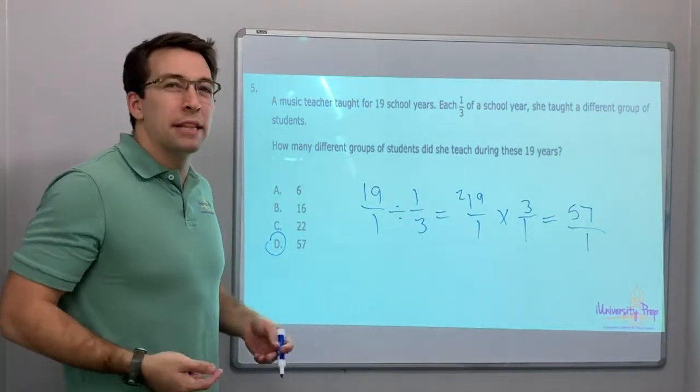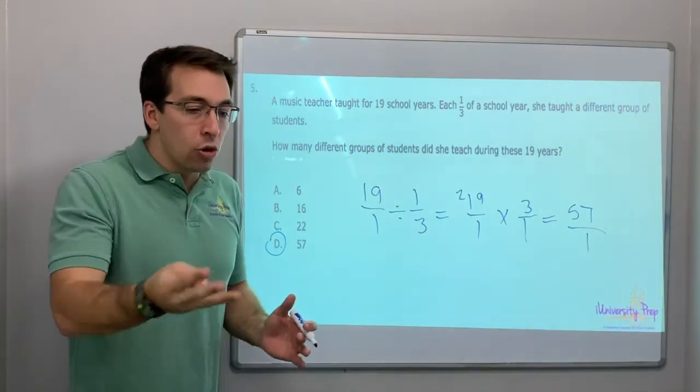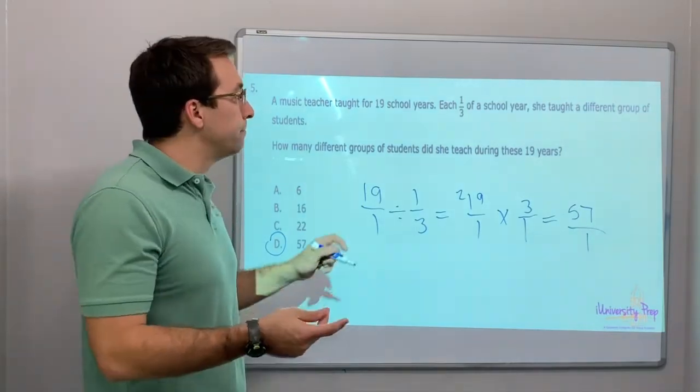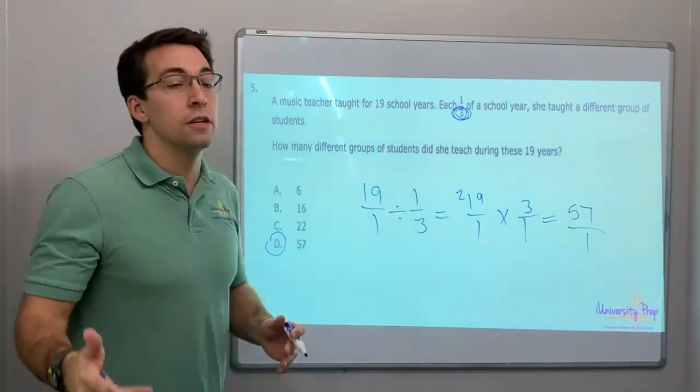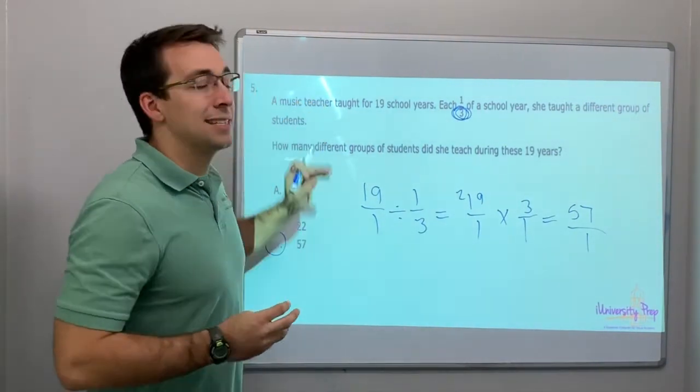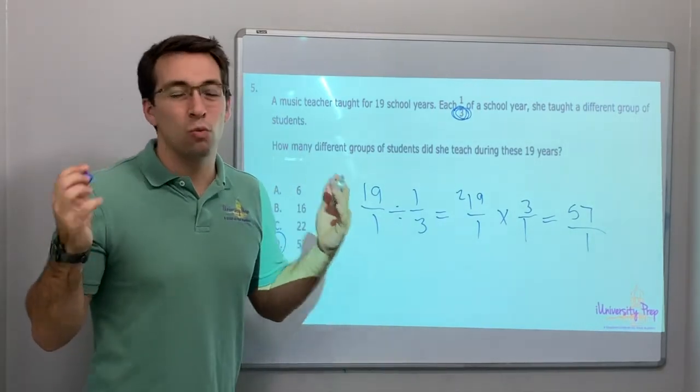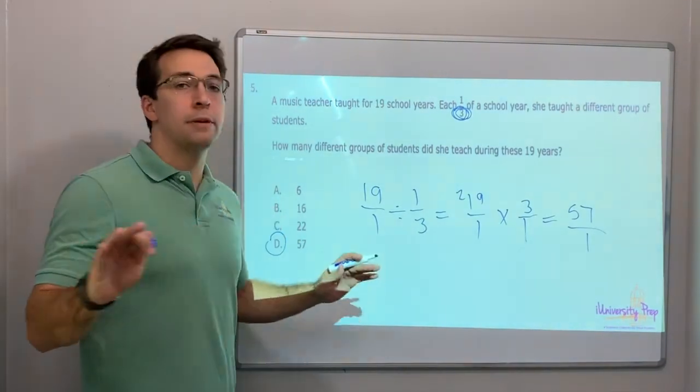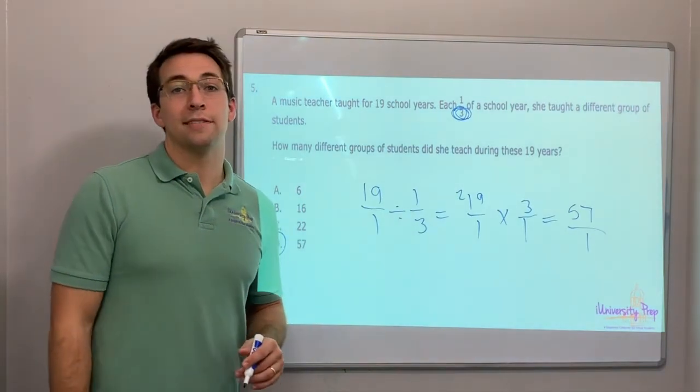Okay, another way to think about that. Each school year, she taught 19 school years, she had three groups. So how many groups total? Look, she had three different groups because one-third of the year, she got a new group. It's, I know, this type of question is just confusing because of the words they're using. You guys know how to do it. You're going to be great. So have a great day. Hope you're enjoying the videos and see you next time.